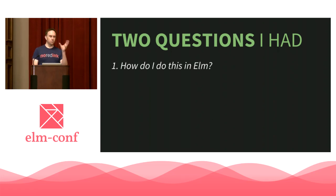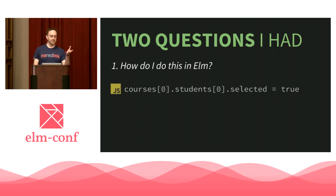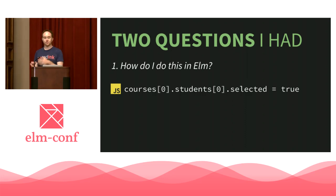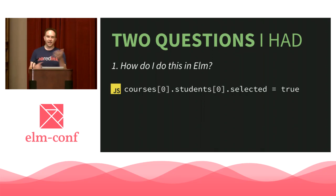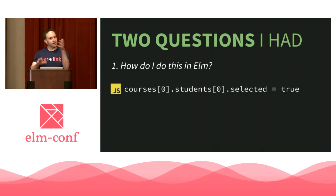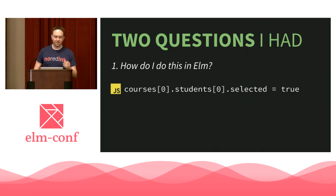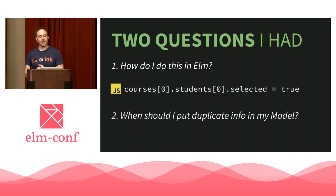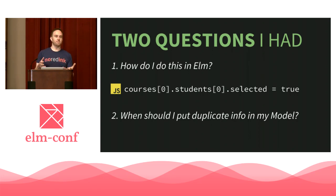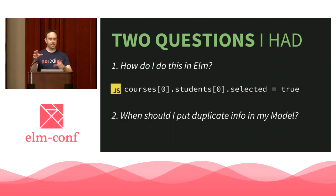One was how to do something like: courses[0].students[0].selected = true — that nested record update syntax. And another question I had was: when, if ever, should I put duplicate information in my model? Should I ever have the same piece of information in two different places? Is that a bad idea? What are the tradeoffs?